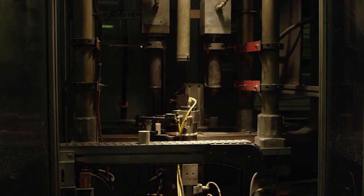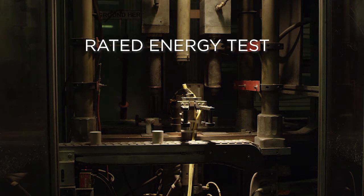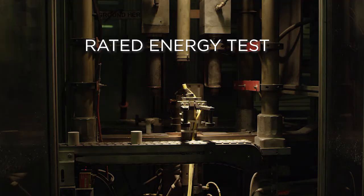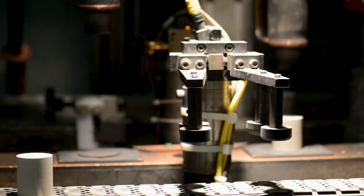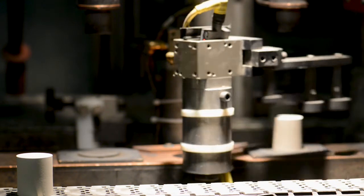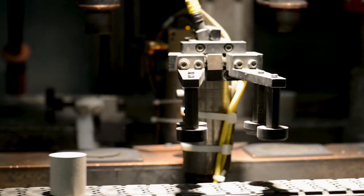Hubble qualifies each and every new MOV with a 100% rated energy test. The larger the diameter of the disc, the more energy impulses it must withstand to prove it meets Hubble standards. This pass or fail test was devised by Hubble engineers to guarantee there are no flaws in all new MOV discs.